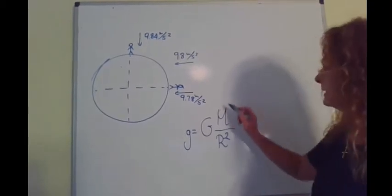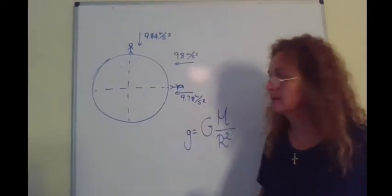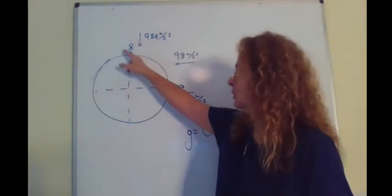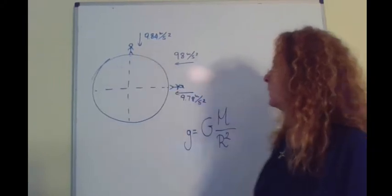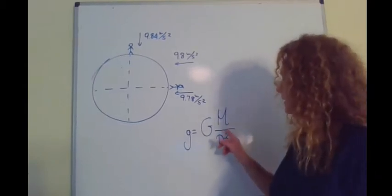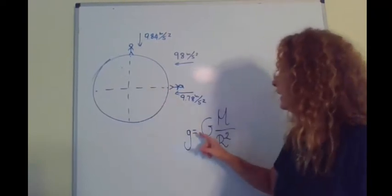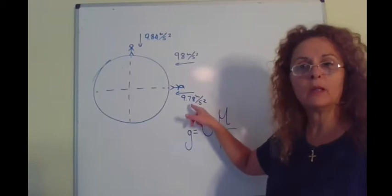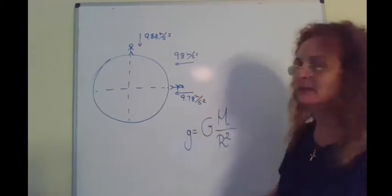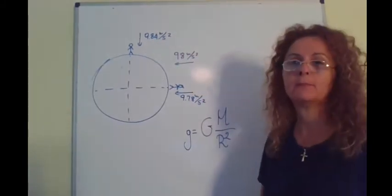This gives us the acceleration the objects have when they fall close to a planet. So using, let's say that we are close to the surface of the Earth, we find that just because the Earth is not perfectly round, at the equator where the distance from the center of the Earth is a little bigger, the acceleration of gravity is 9.78 meters per second squared, while on the poles, it's 9.84 meters per second squared.